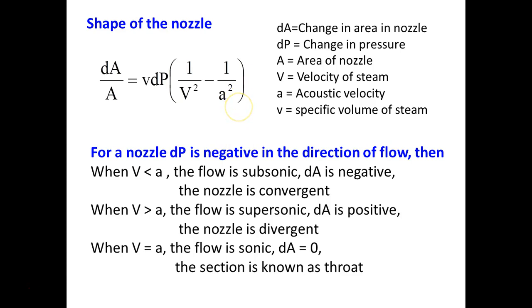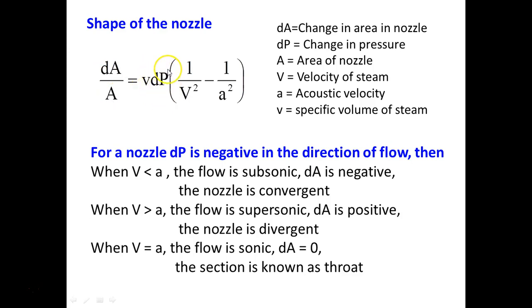We have converging passage, diverging passage, converging-diverging passage, and the throat section. From the continuity equation derivation, we get the equation dA/A. Here dA is the change of area, dP is the pressure change, V is the velocity of the steam, and A is the acoustic velocity — that is, the velocity of sound in the fluid medium, which here is steam. When the steam flows through the nozzle, the pressure is always decreasing from inlet to outlet, and the velocity V is increasing.